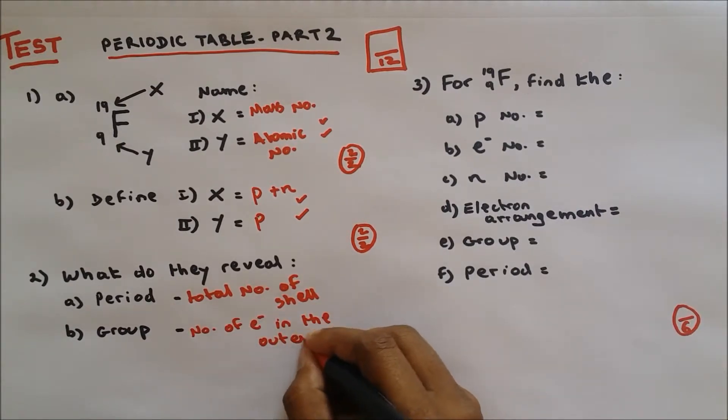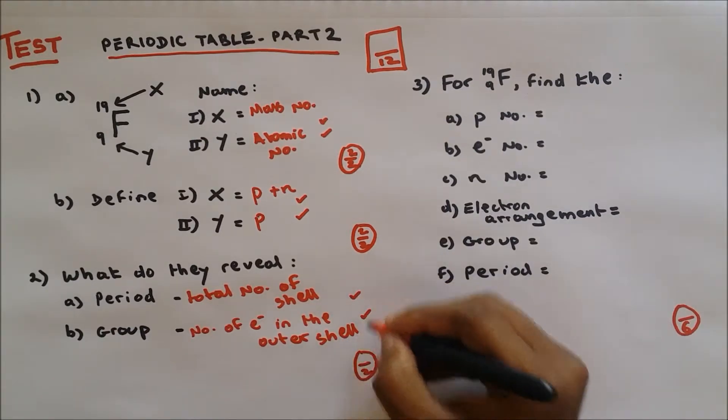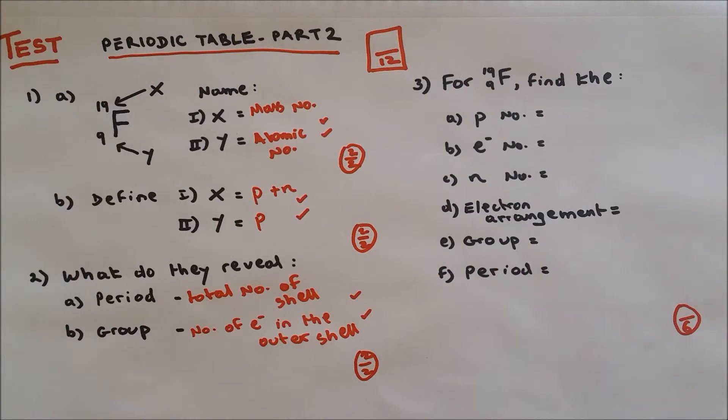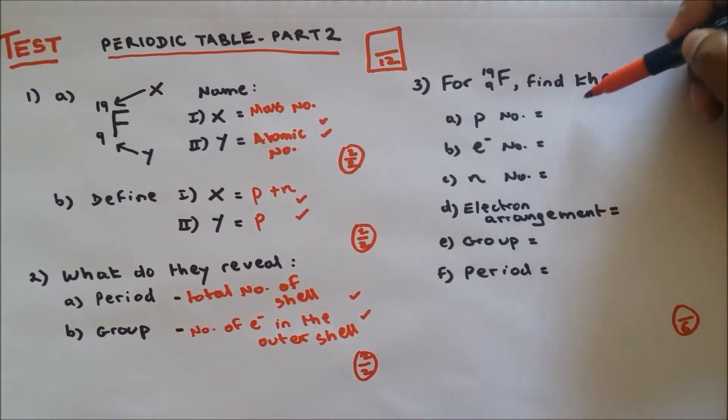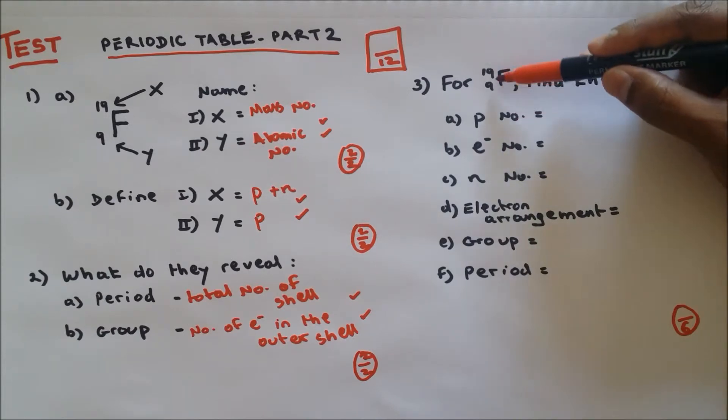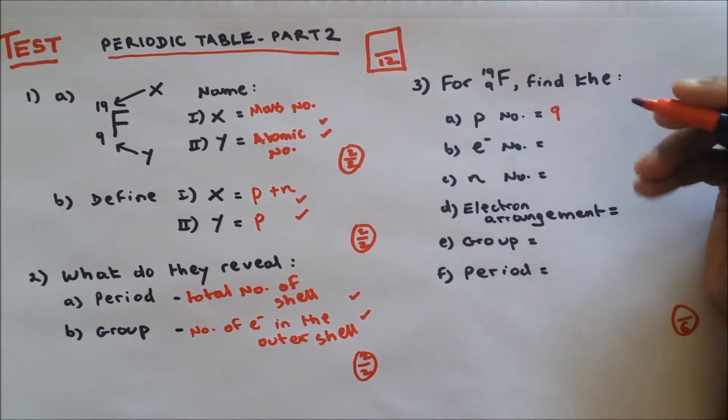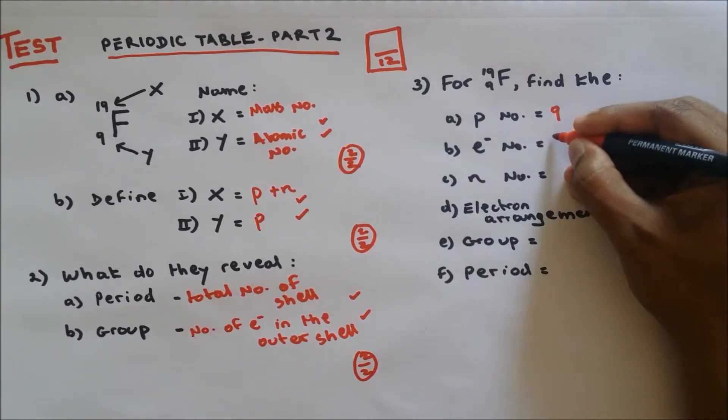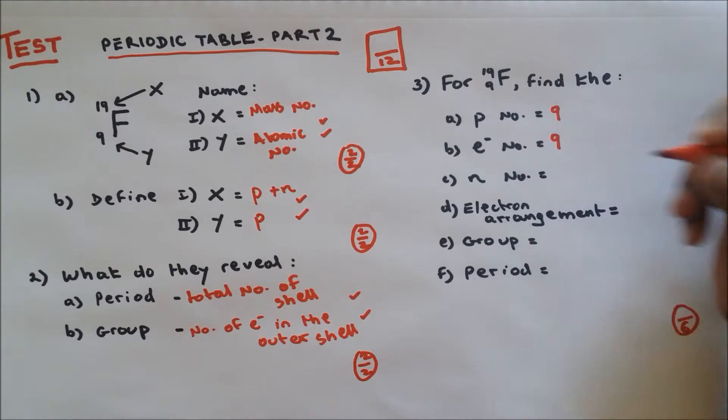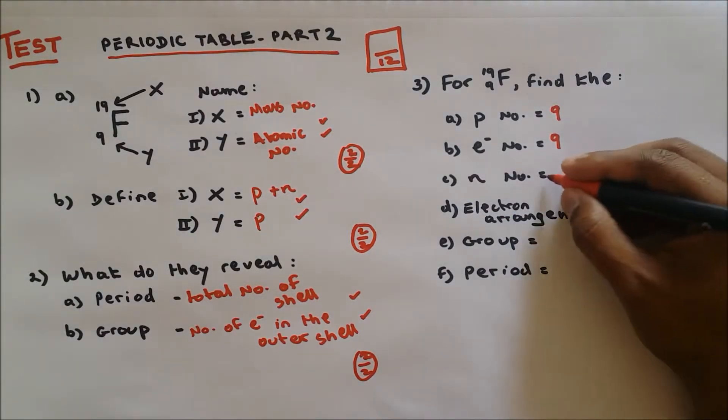Question number three. For fluorine, find the proton number. Proton number is the atomic number, and in this case is 9. Electron, the number of protons is the same as electrons, so this is also 9. Neutron number, the answer for this is 10.